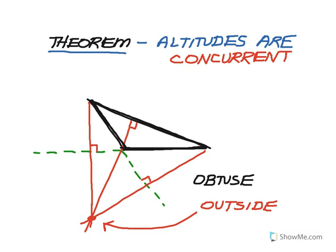In the next scenario, with an obtuse triangle, the altitudes are all concurrent but notice that they meet outside of the original triangle. That's because two of the altitudes of an obtuse triangle are actually outside the triangle, and they intersect outside the triangle as does the third. So for obtuse triangles, the altitudes intersect outside.